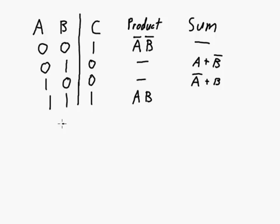So from those two columns, we can make the sum of products expression and the product of sums expression. Here's the product of sums expression using this product column and the sum of products expression. The two products are simply ORed together.